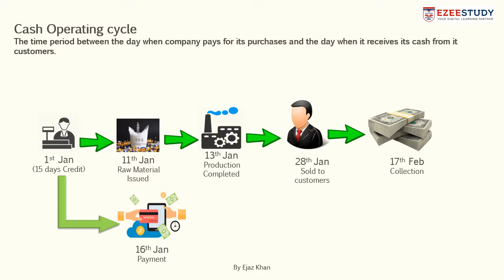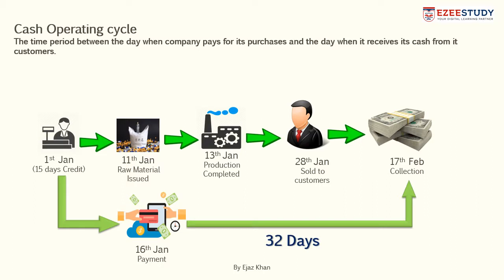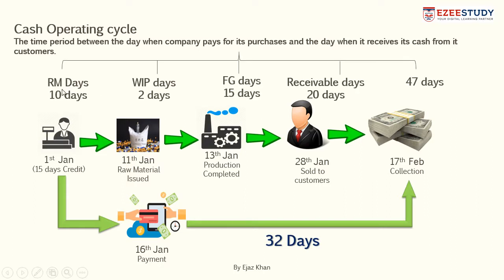Assuming customers pay after 20 days, on 17th of February we will be recovering cash from our customers. We purchased raw material on 1st of January and collected cash on 17th of February. However, the cash operating cycle does not start from 1st January — it starts from 16th of January, the day the company paid for its purchases, until the date it received cash from customers. The total duration is 32 days, which is the sum of raw material days, work-in-process days, finished goods days, and receivable days (47 days) less the 15-day credit period allowed by suppliers.